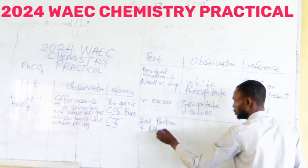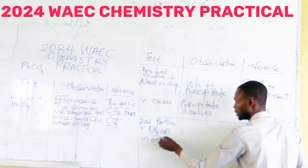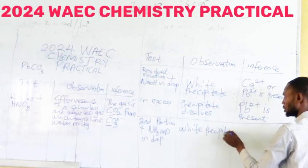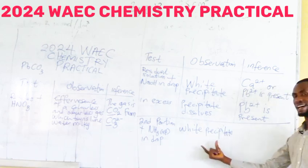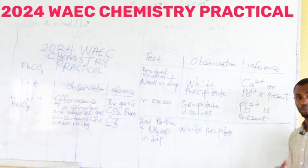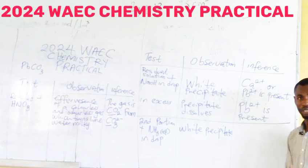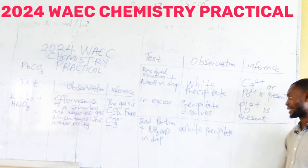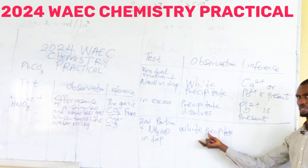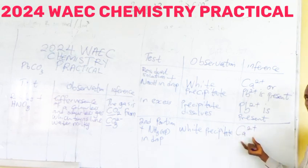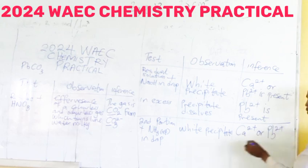To the second portion we add aqueous ammonia dropwise. If the reagents are in good condition, we are going to observe a white precipitate as well. If you observe a different result contrary to what is on the board, it means the reagent is weak, the percentage impurity is very high, or you are using bad water in mixing your reagent — that can interfere with your result. So if you add aqueous ammonia dropwise and observe a white precipitate, our inference should be that Ca²⁺ or Pb²⁺ is present.